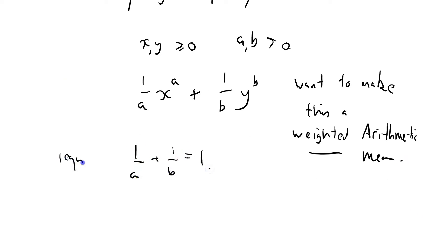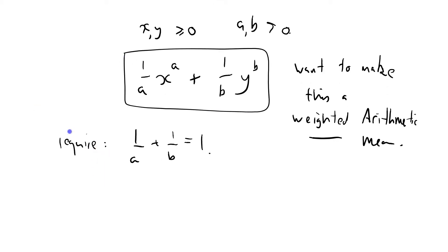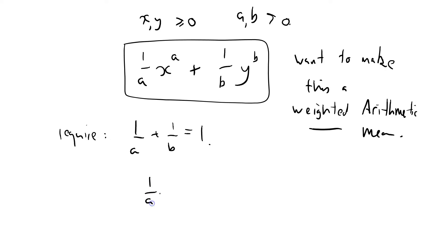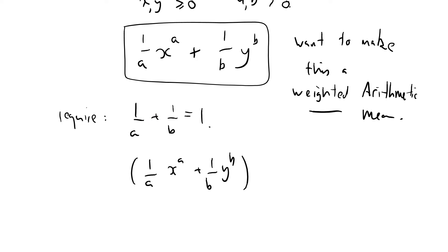I'm just going to require that. So now it's a weighted arithmetic mean: 1 over A times X to the A, plus 1 over B times Y to the power B. We've got this restriction that 1 over A plus 1 over B equals 1. That is greater than or equal to — let's get it right — it's a weighted geometric mean of X to the power A and Y to the power B.